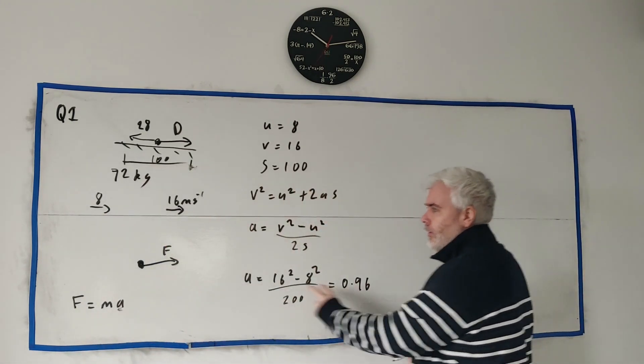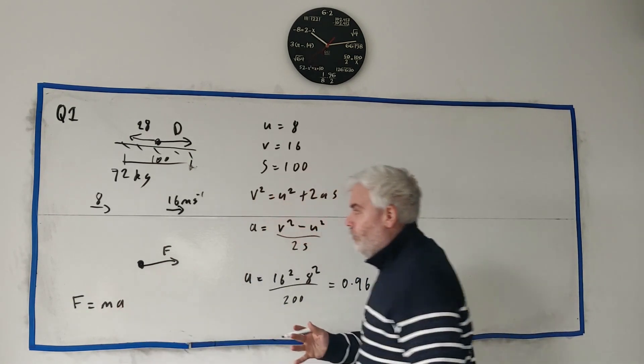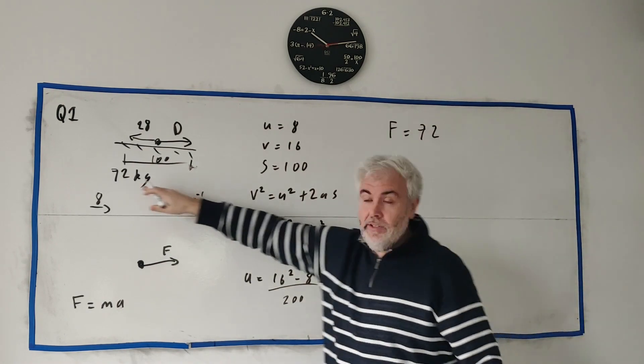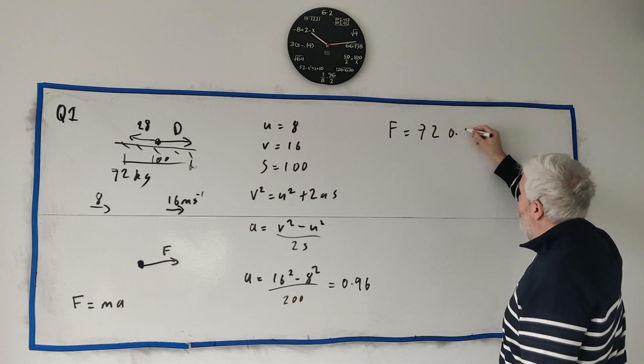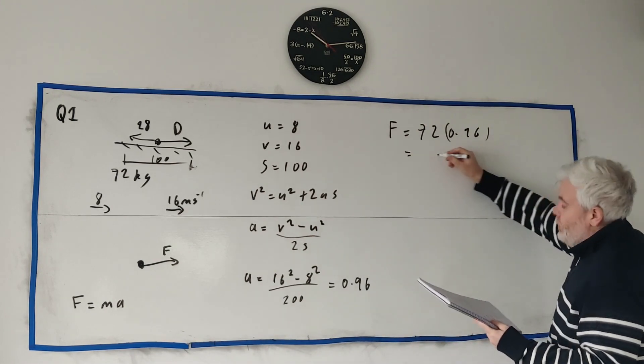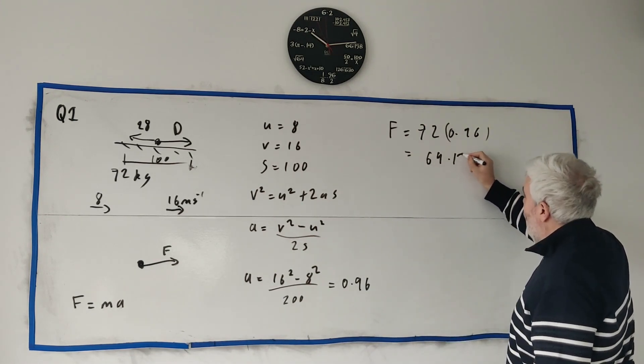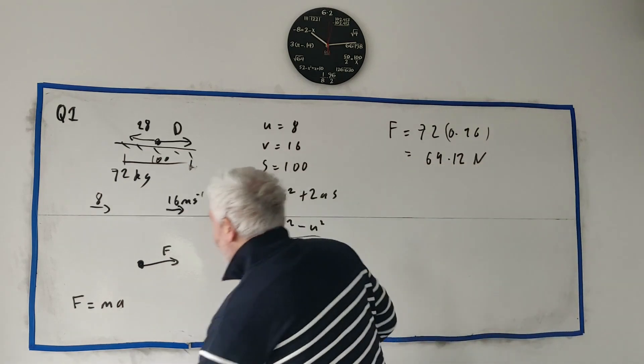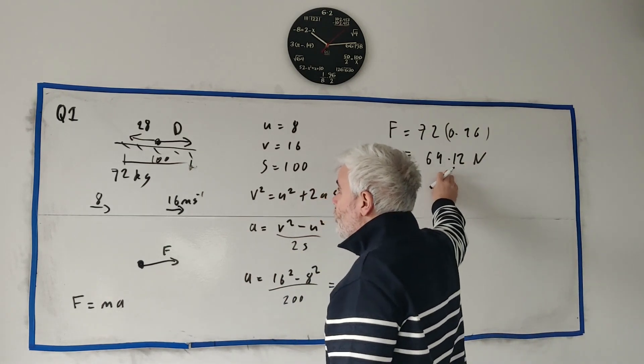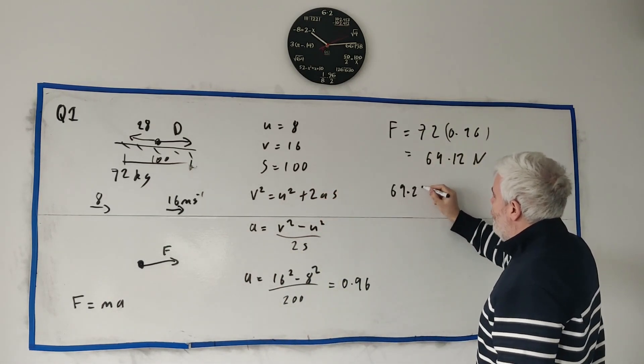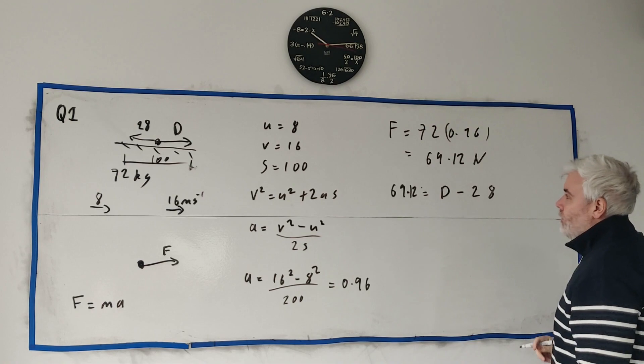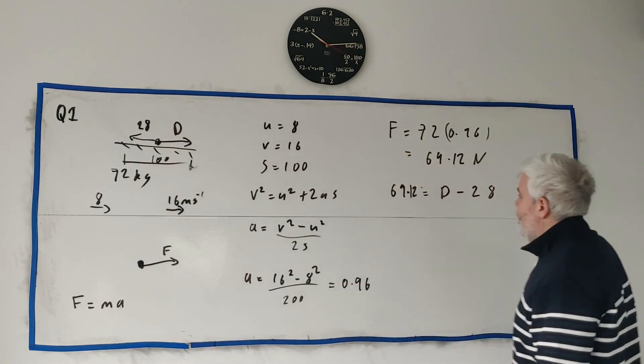And now that we know A, we should find the overall force. The overall force is equal to 72 kilograms. That's the total mass. Times 0.96. We multiply them in. We will get the total force in this system is 69.12 newtons. So to say that again, this and this combines together to get this total force. So that means 69.12 must equal D minus 28.